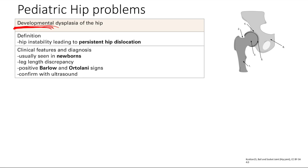Because the hip will be dislocated, you're going to have a leg length discrepancy. Your hip's going to protrude out, so your leg's going to be a little longer. And there's going to be positive Barlow and Ortolani signs. Basically, when you move the hips around, you get a poppable clunk sound, which is the hip dislocating — that's a positive sign.